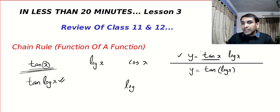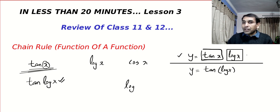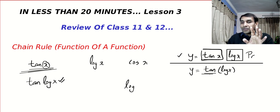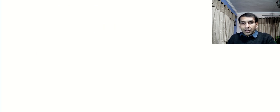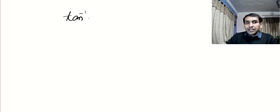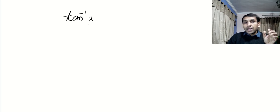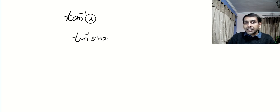Look at this. The first one is tan x — a complete function — multiplied by log x, so we apply product rule. But the second one: I can see tan, but it's not complete. When I look for the variable, I don't see x; instead there is another function. So this is a chain function. Another example: normally the function is tan inverse x, but if someone replaced that x with sin x, giving tan inverse(sin x), that is a composite or chain function.